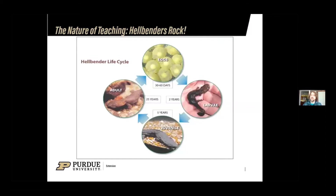Adults breed under those big rocks, and hellbenders start out as eggs that hatch in about 30 to 60 days, at which point they are gilled larvae — the larvae do have gills right behind their heads. At about two years of age, they lose those gills and are then considered juveniles — basically like teenagers. They'll be a juvenile for about another four or five years, at which point they will be considered mature at usually six to eight years old and live another 20 to 25 years as adults.